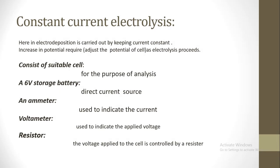Constant Current Electrolysis: Here, electrodeposition is carried out by keeping current constant. Increase in potential is required to adjust the potential of the cell as electrolysis proceeds. It consists of a suitable cell for the purpose of analysis, a 6V storage battery as a direct current source,